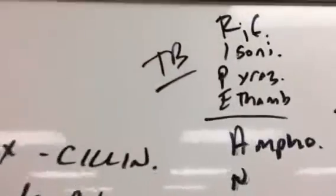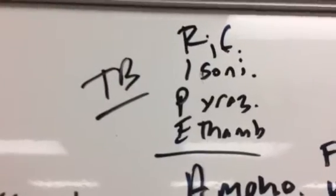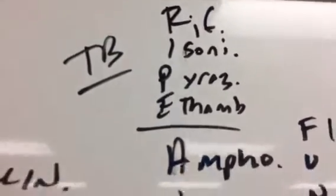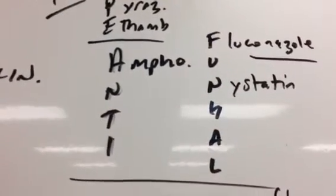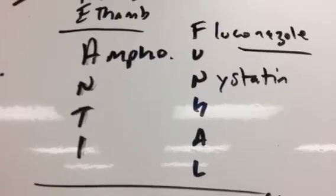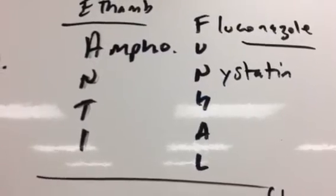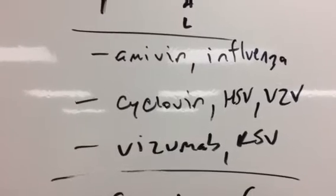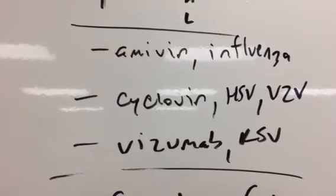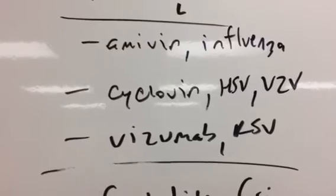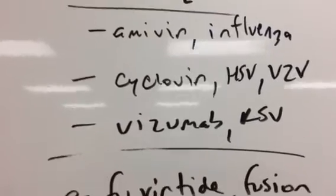Going up to TB. So we have RIPE: rifampin, isoniazid, pyrazinamide, ethambutol. Those are our big four. Then antifungal. So the amphotericin B from the A, the fluconazole from the F, and the nystatin from N. Some of the antivirals, non-HIV antivirals, amivir for influenza, cyclovir for HSV and VZV. And then vizumab for RSV as those stems.